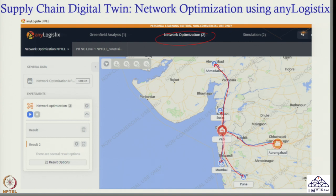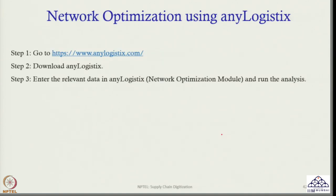The software not only tells me where the DC and factory should be located, but also gives the actual road route which the trucks would follow, so that customers can be reached faster and total transportation cost is minimized. Now let us go to the anyLogistix software and see how network optimization can be done.